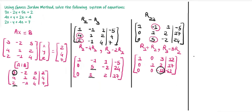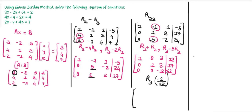The next row transformation is to make the −12 in the third row become 1. We divide the whole row by −12, performing R3 → R3 × (−1/12). The first row remains 1, 0, 3, 12 and the second row remains 0, 1, 2, 17. The third row becomes 0, 0, 1, 61/12.